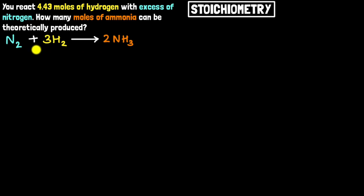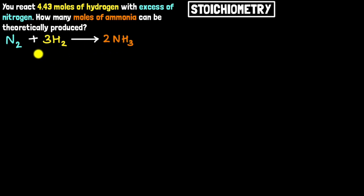Our first step is to ensure that we have a balanced equation. You can see it is balanced — you have two atoms of nitrogen on the left-hand side and two atoms of nitrogen on the right. You have six atoms of hydrogen on each side. The balanced equation tells us that one molecule of nitrogen will react with three molecules of hydrogen to give two molecules of ammonia.